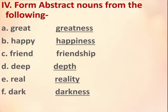Question number 4: Form abstract nouns. Abstract nouns are the names given to our feelings, which we cannot touch and neither can we see — we can only feel them. A: Great — Greatness. Happy — Happiness. Friend — Friendship. Deep — Depth. Real — Reality. Dark — Darkness.